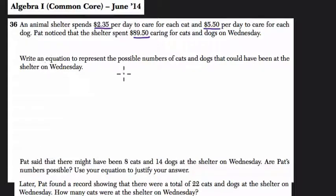And they say write an equation to represent the possible number of cats and dogs that could have been at the shelter on Wednesday. So let's say C is for cats and D is for dogs.